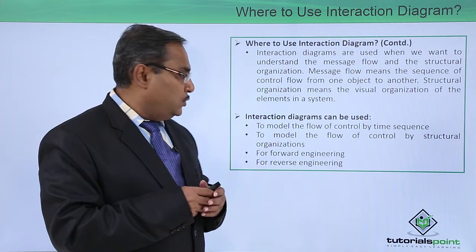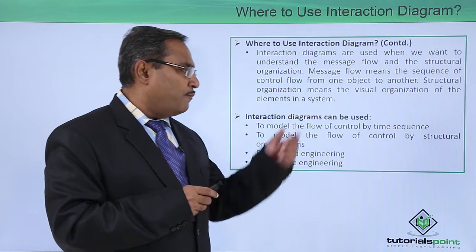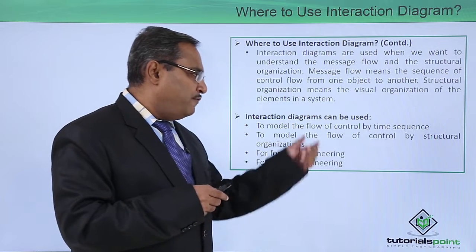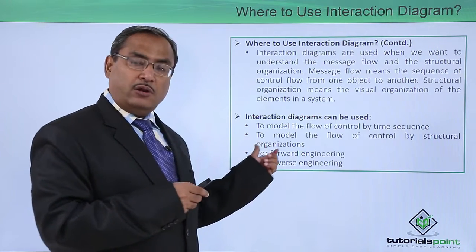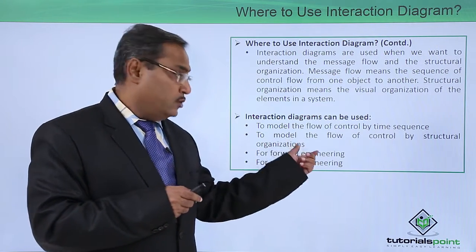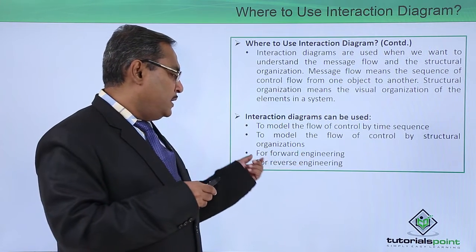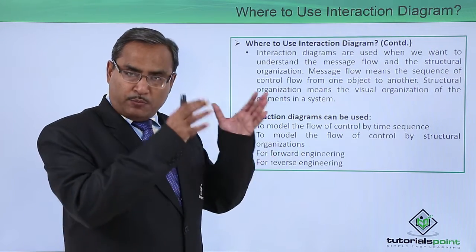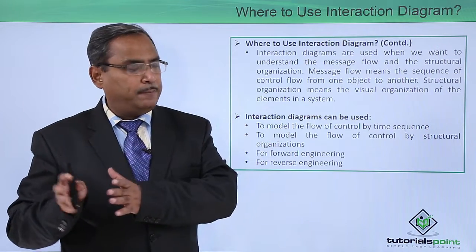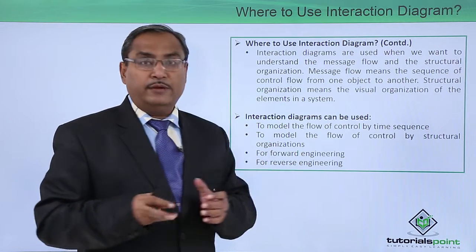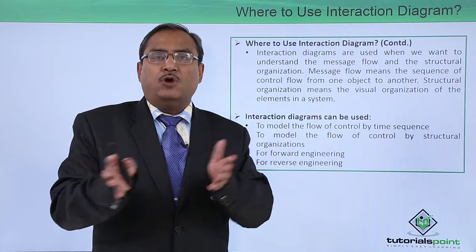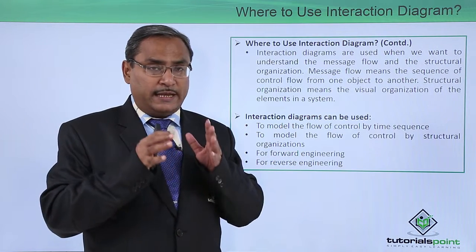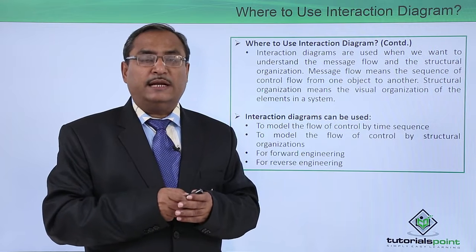Interaction diagrams can be used to model the flow of control by time sequence, and to model the flow of control by structural organizations — here we will be using the collaboration diagram. They are also used for forward engineering, when from the model the software development will take place, and for reverse engineering, when from the developed software we are trying to get back to the model. These are the different cases where you can use interaction diagrams.